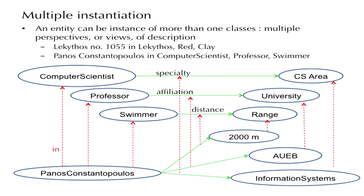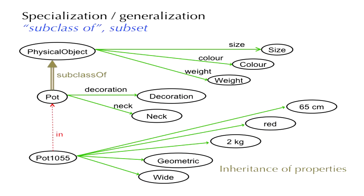Because this instance belongs to each of these classes, it can be described with properties inherited from each class. The usefulness of multiple instantiation is that it allows us to define different points of view; from each point of view there is a limited, controllable number of properties needed for a description. By declaring an item as an instance of more than one class, we have at hand many properties — some from each point of view — that combined give a complete description.